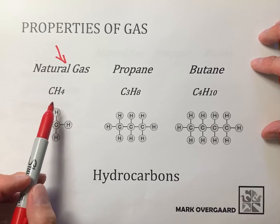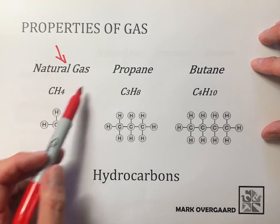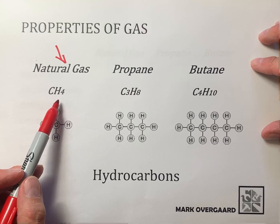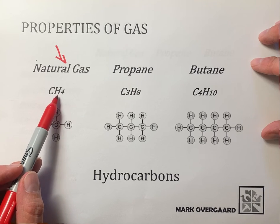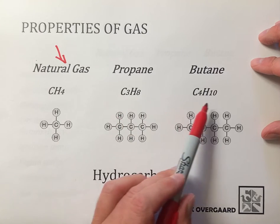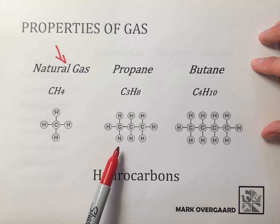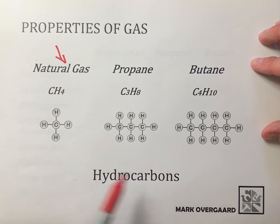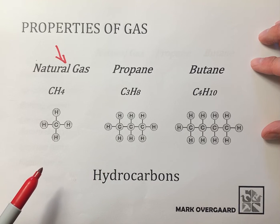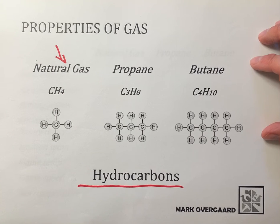Their chemical formulas are: CH4 for natural gas, sometimes called methane — one carbon, four hydrogens. Propane is C3H8 and butane is C4H10. You can see how the carbons and hydrogens all bond together in the three of them. All three form a family called the hydrocarbons, because of hydrogen and carbon.